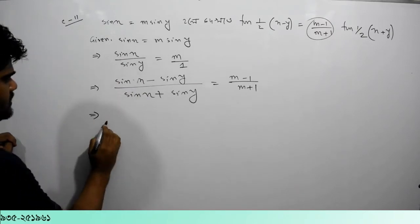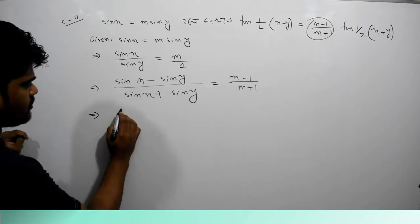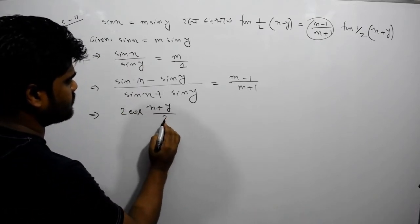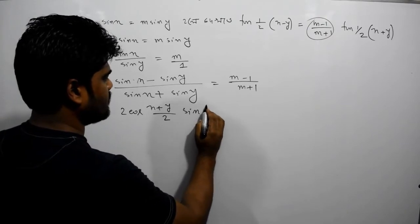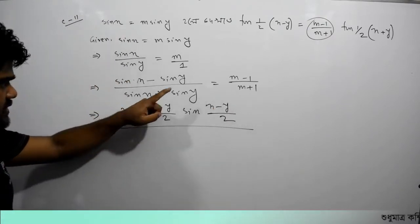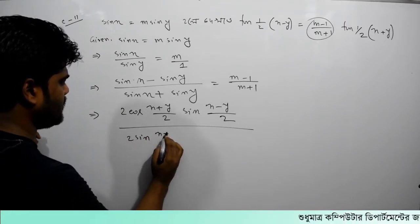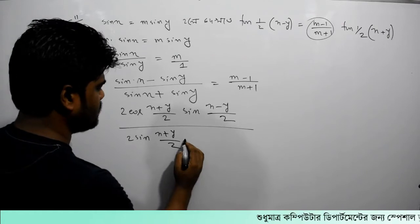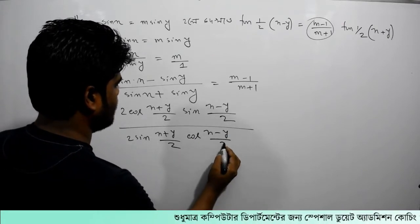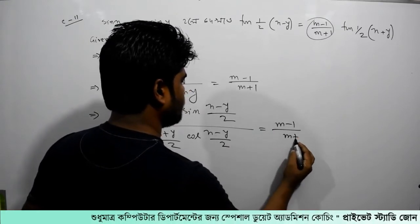Let's see. Sin C minus sin D equals 2 cos((C+D)/2) times sin((C-D)/2). We have 2 cos((C-D)/2). Sin x plus sin y equals 2 sin((C+D)/2) times cos((C-D)/2). This equals m minus 1 divided by m plus 1.